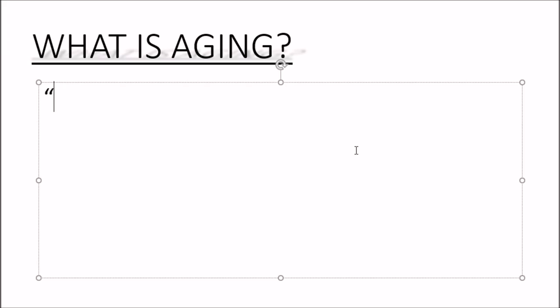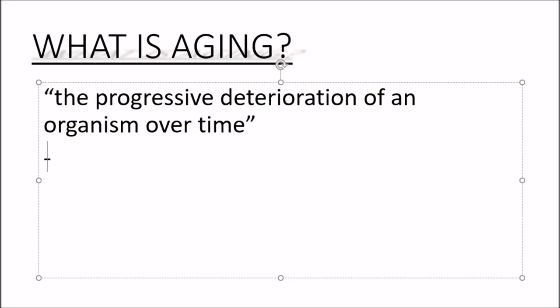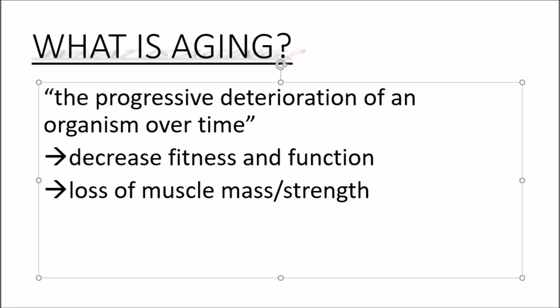So firstly, what actually is ageing? Ageing is the progressive deterioration of an organism over time. It's pretty much characterised by the accumulation of damage and the loss of function.